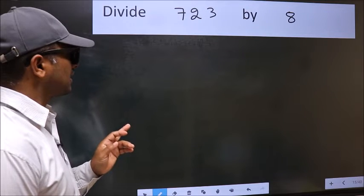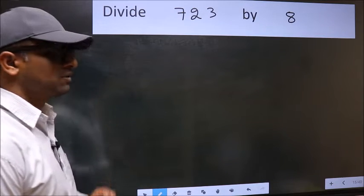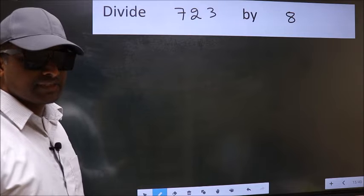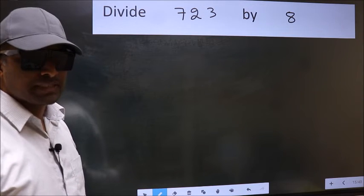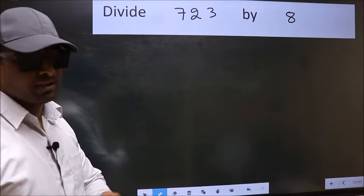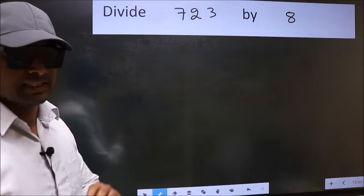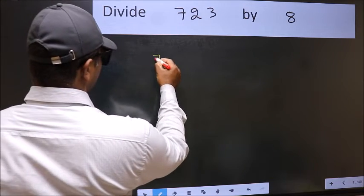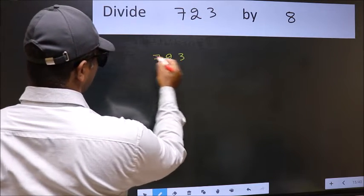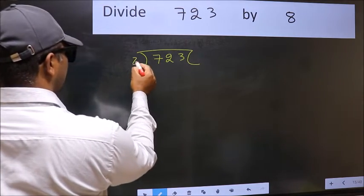Divide 723 by 8. While doing this division, many do this mistake. What is the mistake that they do? I will let you know. But before that, we should frame it in this way: 723 and 8 here.